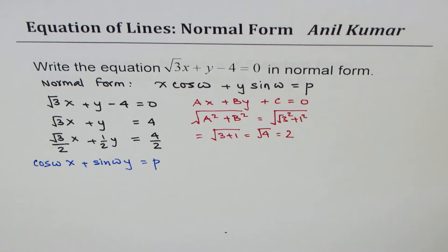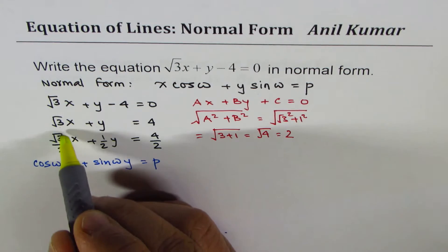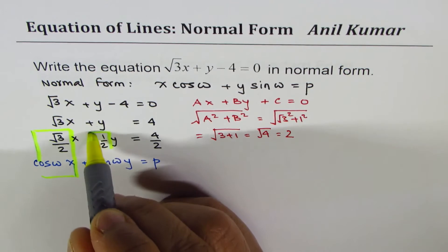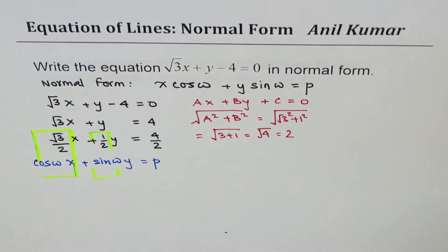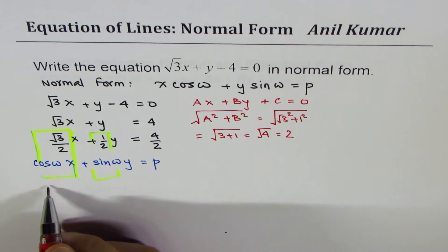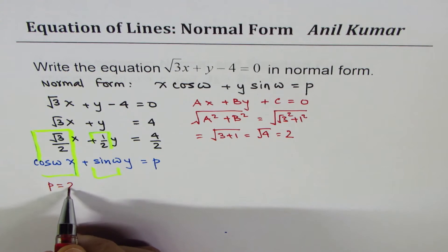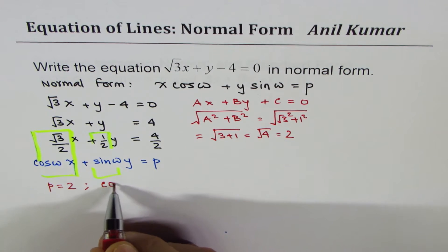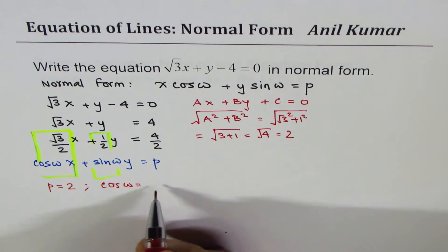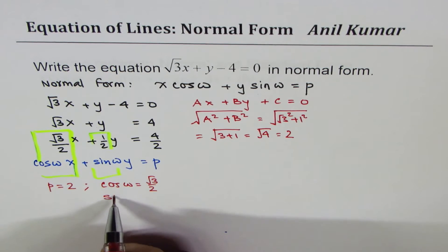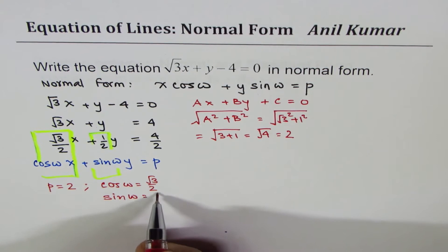If you compare these two equations, the coefficients must match. So p = 4/2 = 2, cos ω = √3/2, and sin ω = 1/2.